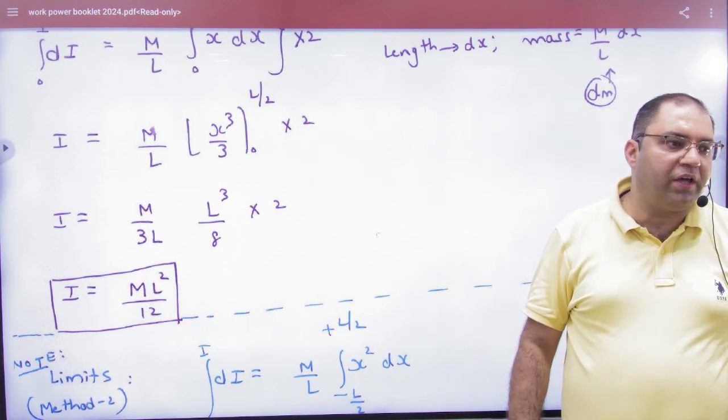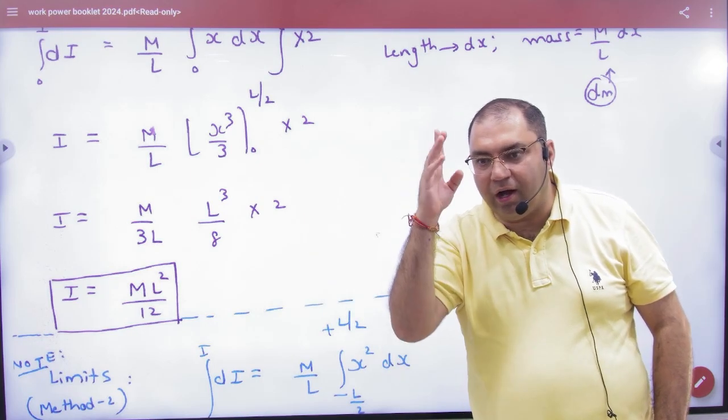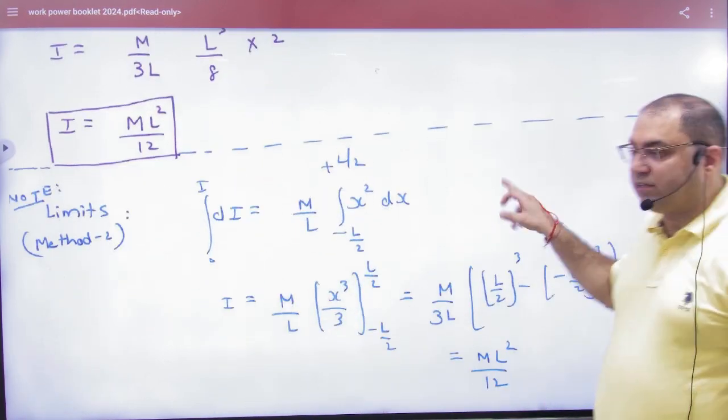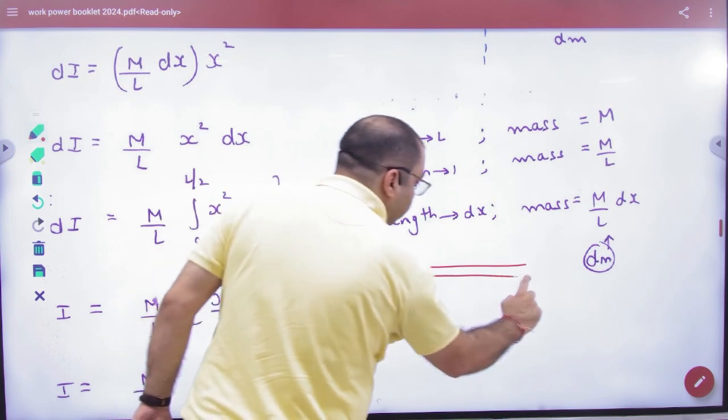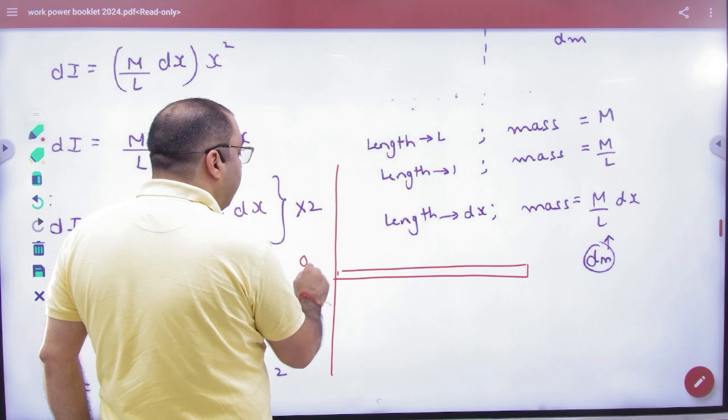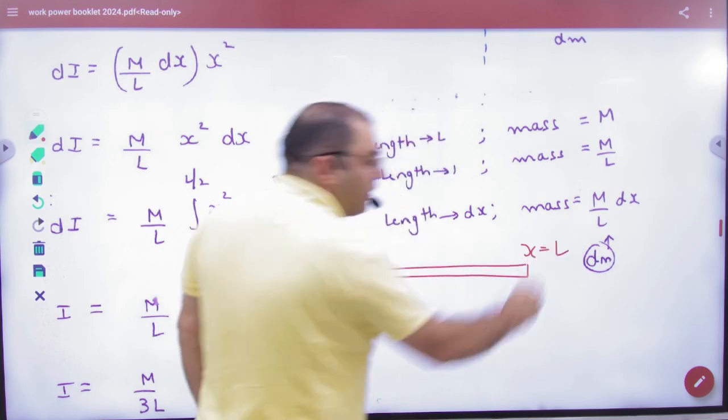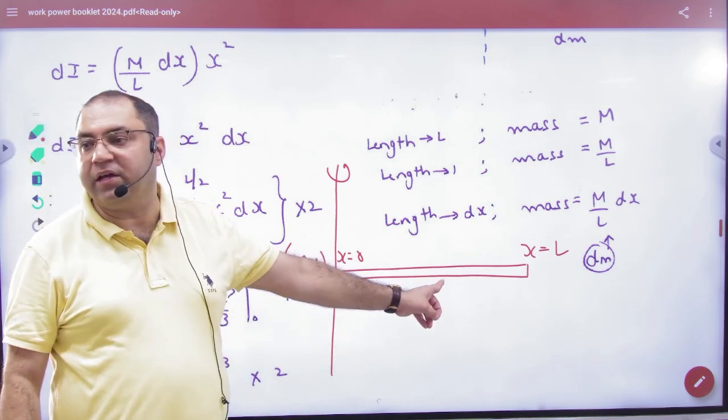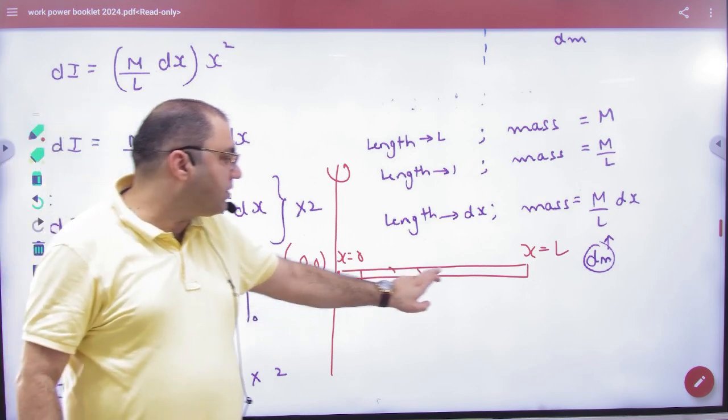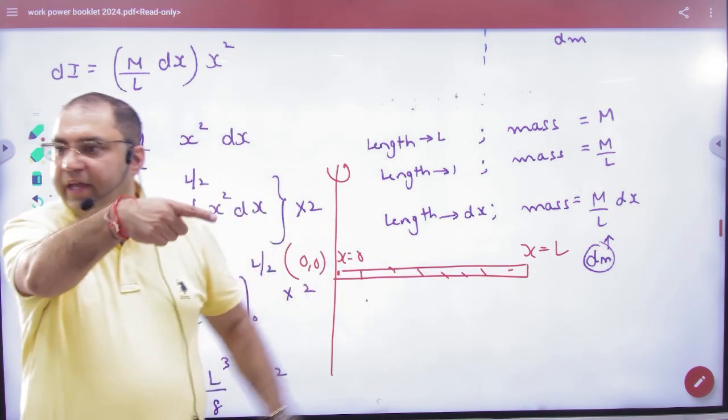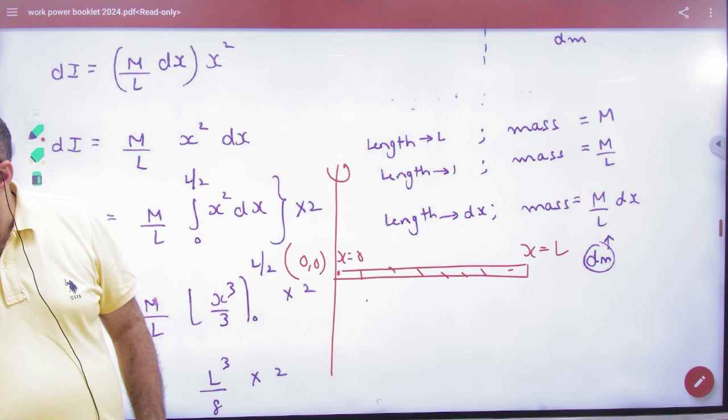But student says, sir, why didn't we do 0 to L? It comes to mind - why not put 0 to L? Let's see what problem happens if I do 0 to L. If I do 0 to L, I'm assuming this is my axis, and this is x equal to 0 point, and L point. If I put 0 to L, then my axis won't pass through center - it will pass through the corner. That's why the limit will come - first element will be here, continuing to here. So doing 0 to L means taking axis at corner, but the axis is not at corner. Right? So don't do 0 to L.